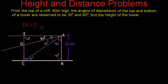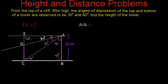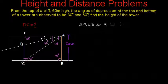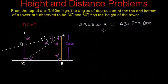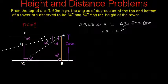If you see properly, A, B, C, E is actually a rectangle. Since ABCE is a rectangle, its opposite sides are equal. That means AB is equal to EC, and this is equal to 60 meters. EA will also be equal to CB. So these are the two things we know.